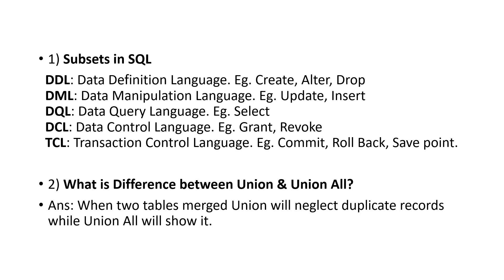TCL is Transaction Control Language. It includes COMMIT, ROLLBACK, and SAVEPOINT. SAVEPOINT is like saving 50% of work done at a certain point. ROLLBACK completely rolls back the transaction. These are the five subsets in SQL.